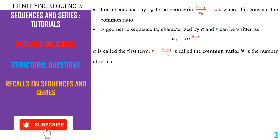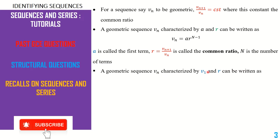Let's see the relationship between capital N and small n. In the first case, if n begins from 1, the very first term of the geometric sequence is V1 and the common ratio is r. We write Vn = V1·r^(n−1), because starting from 1 and ending at n gives n terms, so capital N equals small n. For example, counting from 1 to 10 gives 10 terms.